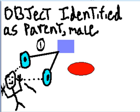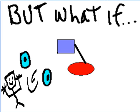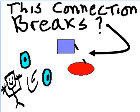One: object identified as parent male. Two: hi dad, I missed you. Big smiley face. But what if this connection breaks?